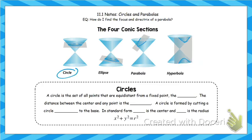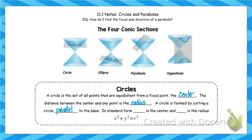We're going to start today with circles because they're the simplest, and parabolas because you may have seen those in algebra 2. We'll save ellipses and hyperbolas for the next two days. A circle is the set of all points that are equidistant from a fixed point called the center. The distance between the center and any point on the circle is the radius. To make a circle as a conic section, you cut the cone parallel to the base.